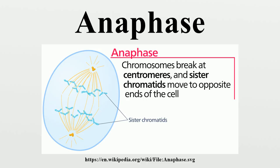The centromeres are split, and the new daughter chromosomes are pulled toward the poles. They take on a V-shape or Y-shape as they are pulled back. While the chromosomes are drawn to each side of the cell, the non-kinetochore spindle fibers push against each other in a ratcheting action that stretches the cell into an oval.